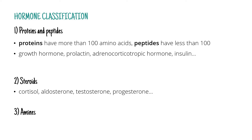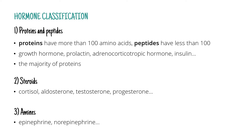Amine hormones are for example norepinephrine or epinephrine. We'll talk about the individual hormones in the upcoming videos. Right now let's only focus on their synthesis. Most hormones are peptides or proteins, so we'll start with their synthesis first.